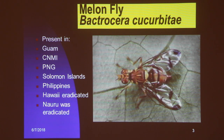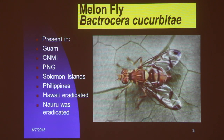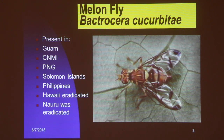Another one is the melon fly. It is present in Guam, CNMI, Papua New Guinea, the Solomons, the Philippines — Hawaii and Nauru have eradicated it. The melon fly mainly attacks watermelons, cucumbers, and other cucurbit family plants. Pohnpei grows a lot of cucumbers, so if this pest arrived it would cause us a lot of problems.